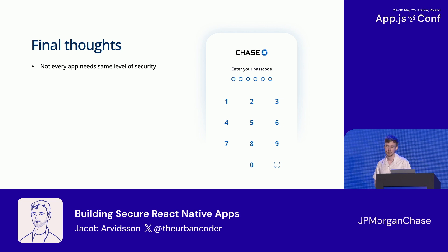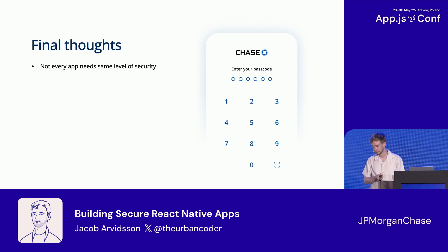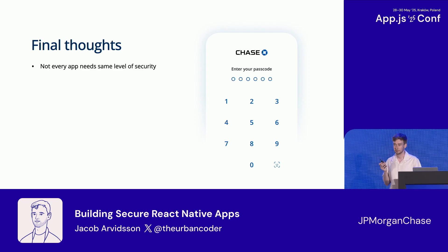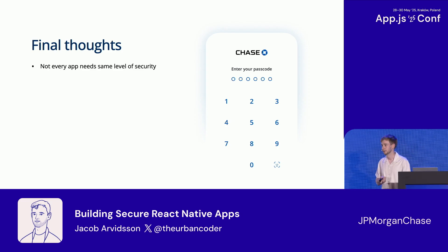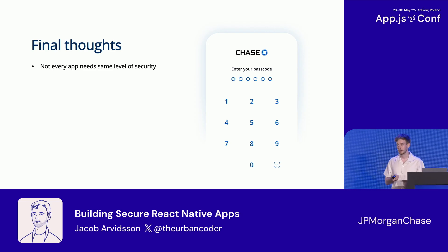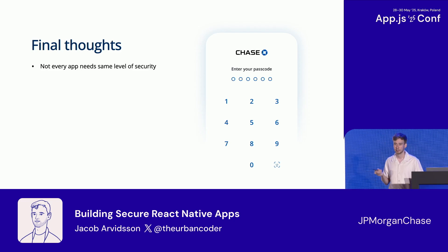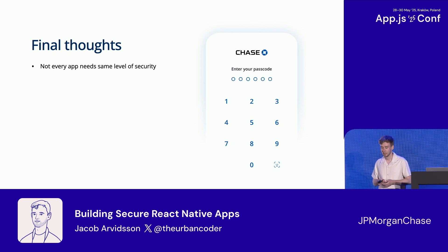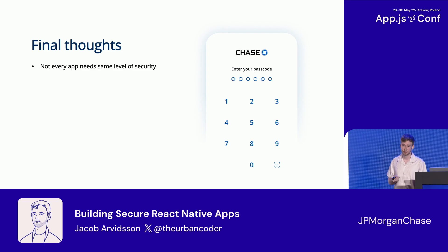To summarize: because of Expo modules and Expo plugins we can basically do everything we can do in brownfield and native apps. One note — a lot of what we do at the bank is because security is our highest priority. Not every app needs this. It's up to you to determine your app's threat model and what risk you can accept. Using a secure store might be overkill for apps displaying public data and could have performance drawbacks.